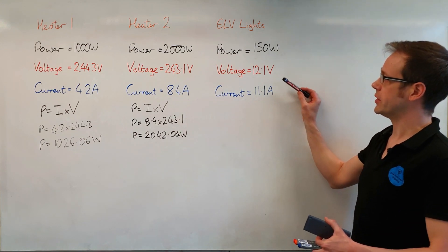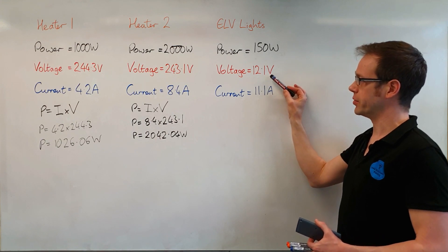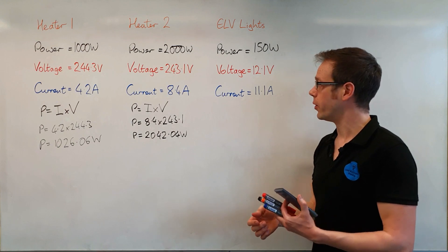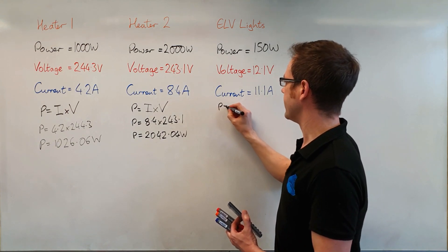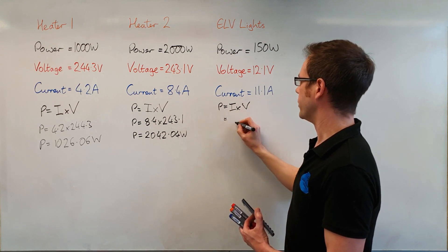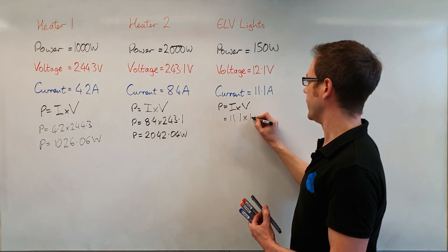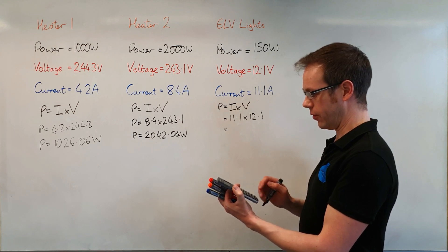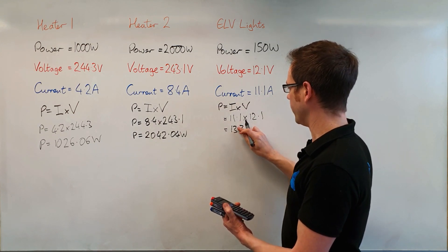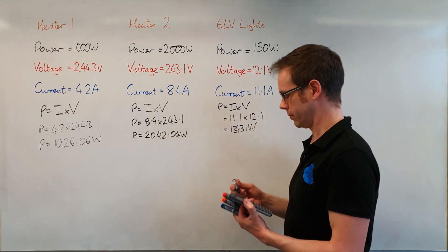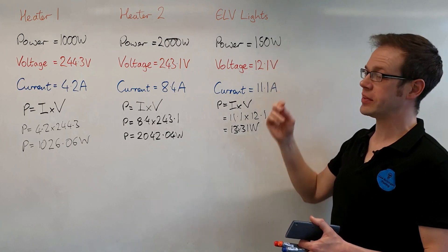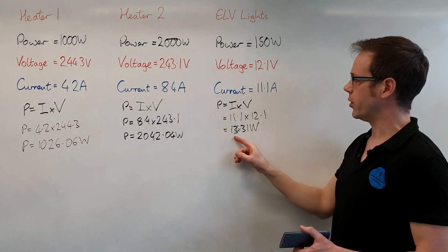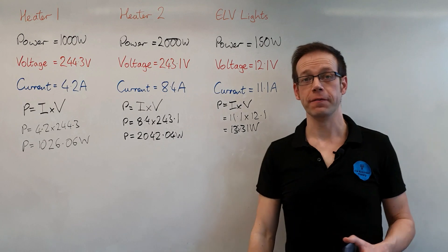Our final example was an interesting one because here we were dealing with a much lower voltage. So let's see if this relationship still holds true. We've got 12.1 volts and 11.1 amps, so P is equal to I times V, which is equal to 11.1 times 12.1. When we do that calculation we come out with a value of 134.31 watts. You can see that's reasonably close to our expected 150 watts, with manufacturer's tolerances and the fact that we've got this connected to a transformer causing some differences, but the principle holds true.